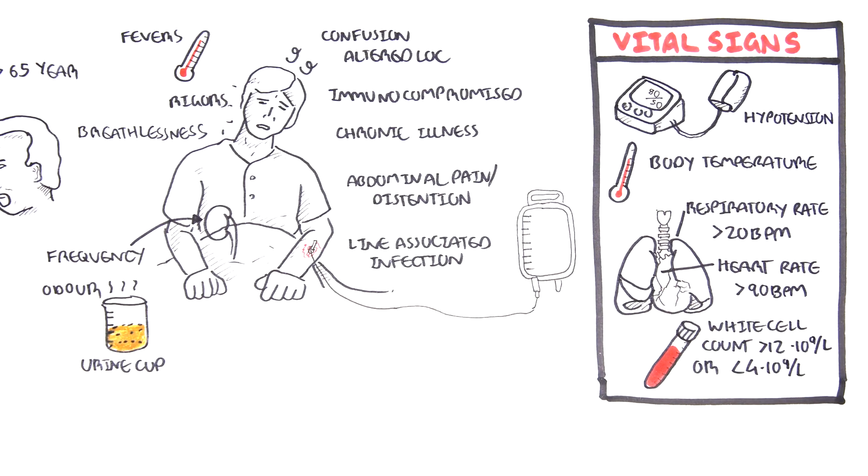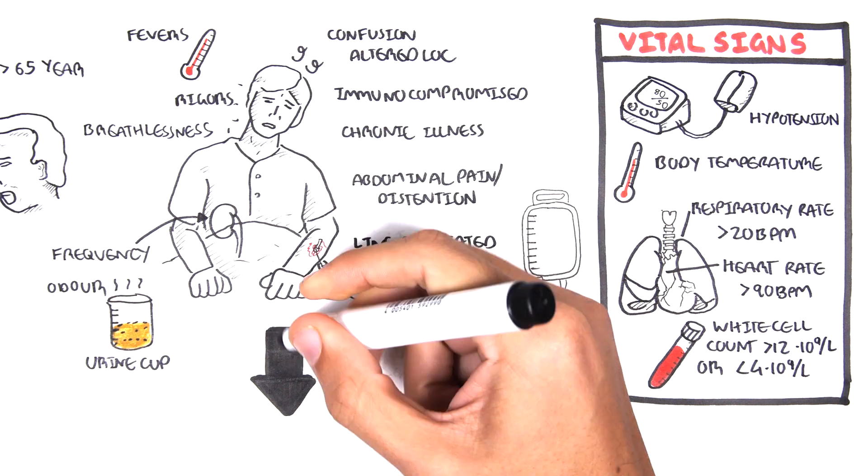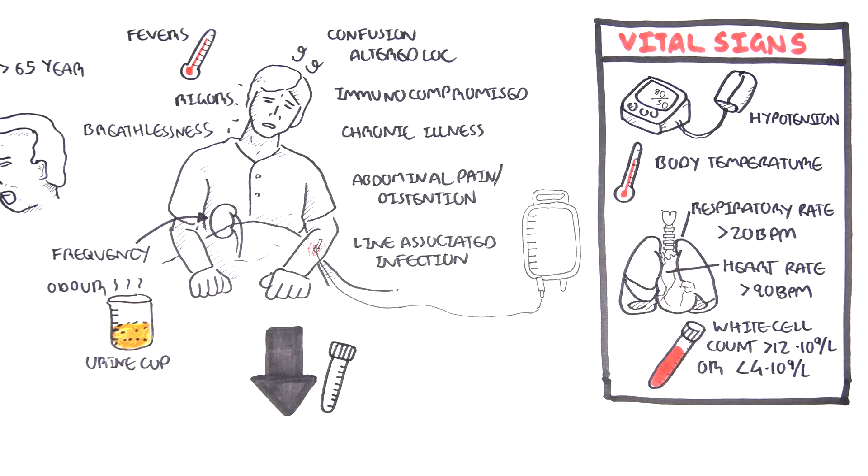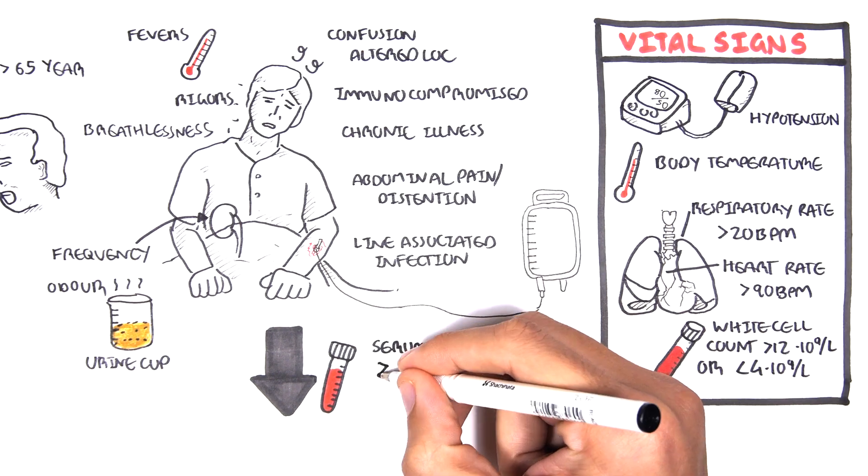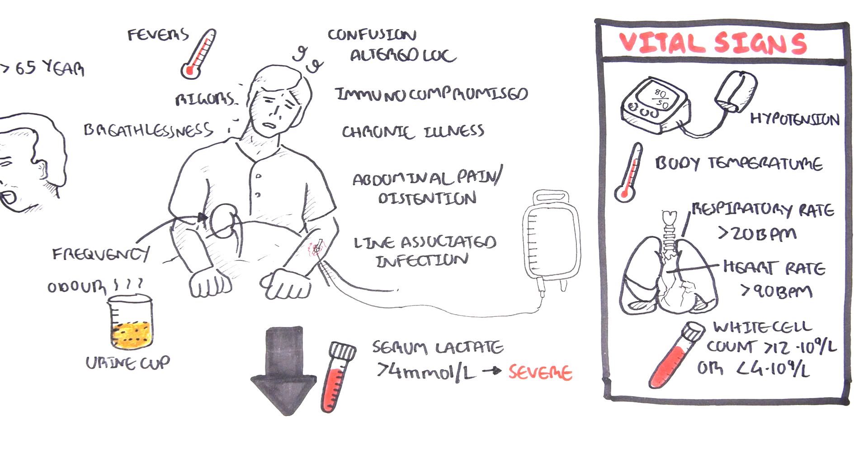Anyone with suspicion of sepsis should have investigations, which one of the most important ones is measuring serum lactate. A serum lactate over 4 millimoles per liter indicates acidosis and highly likely sepsis.